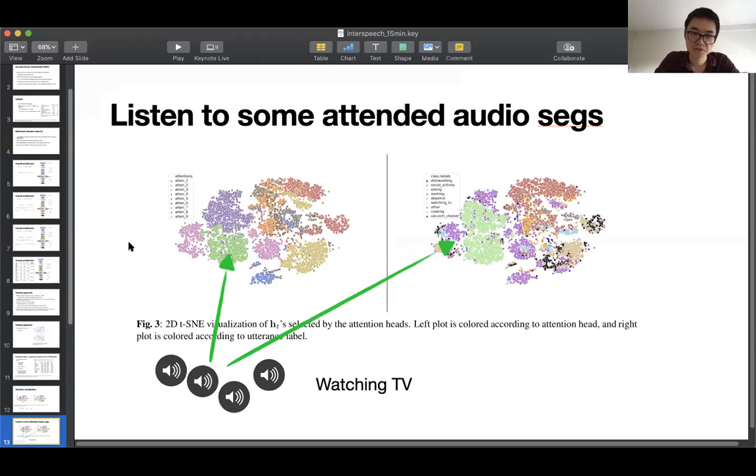So specifically, we can see that, for example, on the left side, the green area is represented by attention head three. And on the right side, this is mainly for watching TV. In fact, let's listen to some of the utterances. So basically for each of the ht here, we extrapolate back to the original 10 seconds audio so that we can find out the one second segment from the original 10 second audio that's corresponding to that particular ht. And then we crop that one second segment out and listen to the audio. So this is, for example, attention head three for watching TV.